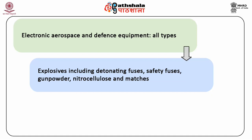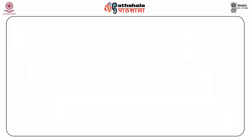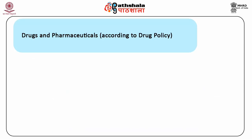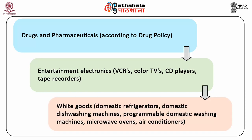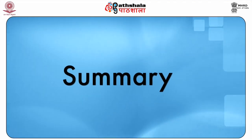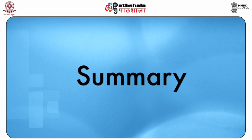Drugs and Pharmaceuticals according to drug policy; entertainment electronics — VCRs, colour TVs, CD players, tape recorders; white goods, that is domestic refrigerators, domestic dish washing machines, programmable dish washing machines, microwave ovens and air conditioners.